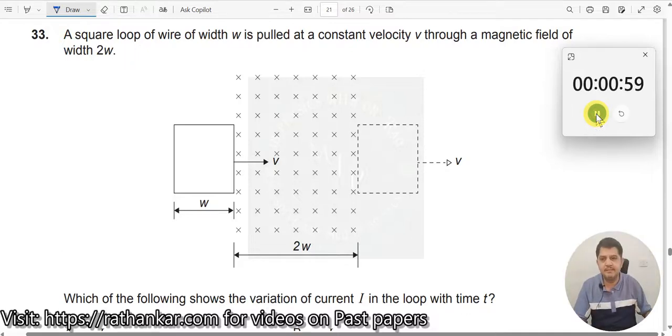Question number 33. A square loop of wire of width W is pulled at a constant velocity V through a magnetic field of width 2W. This is width W and that is 2W over here. It is being asked which of the following shows the variation of the current I in the loop with time T.